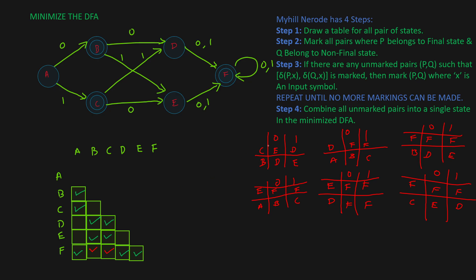Now we have two new marked states, so we go through all the remaining unmarked states again to check if any of their inputs now lead to marked pairs. For C and B on input 0 you go to state E and D — E and D is not yet marked. For D and A on input 0 you go to F and B — F and B is now marked, so we mark D and A. For E and A on input 0 you go to F and B — it is marked, so we mark E and A as well. For E and D on input 0, both go to F and F — not marked, so E and D remains unmarked.